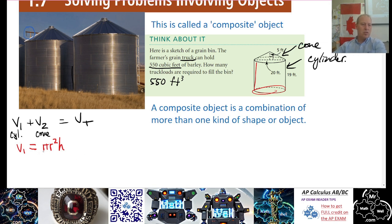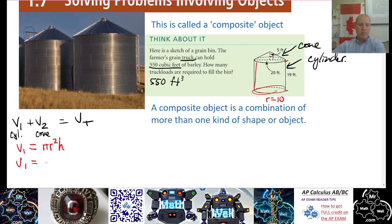Pi is just a regular number — we'll use our calculator's pi button. Don't use 3.14; it's not precise enough. If you don't have a pi button, use 3.14159. We're given the diameter of the bin, so r is going to be half of that — 10 feet, half of 20. The height is given as 19 feet. So Volume 1 equals pi times 10 squared times 19.